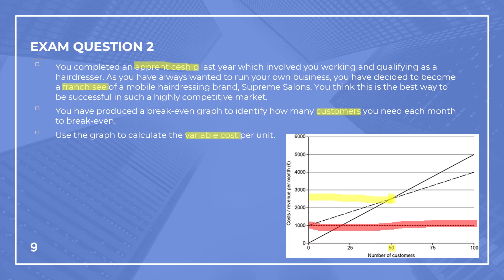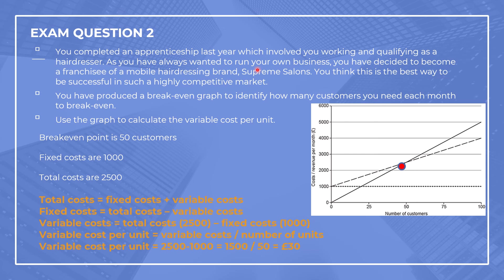We've got 50 customers, total costs of £2,500, and fixed costs of £1,000. We need to work out what our variable cost is per unit. We know that total costs equal fixed costs plus variable costs. So if we want to work out variable costs, we flip the formula: variable costs equals total costs minus fixed costs. Our variable costs are £2,500 minus £1,000, which equals £1,500.